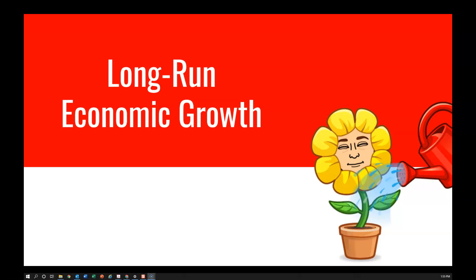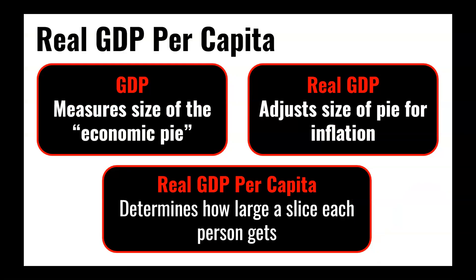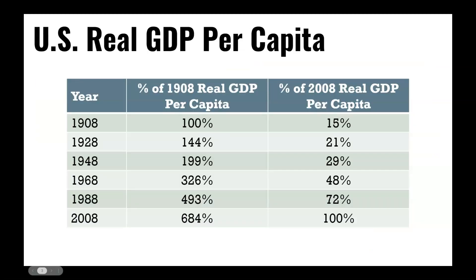We're going to start by talking about what it means to grow. We could measure the size of the economy with GDP, which measures the size of the economic pie that everyone gets to share. Nominal GDP is not very helpful, so let's look at real GDP — adjusted for inflation — to see if that pie is actually getting larger or smaller over time. Even more interesting is real GDP per capita, to determine whether each individual's slice of that pie is getting bigger or smaller. Within the United States, real GDP per capita has been increasing for well over 100 years.